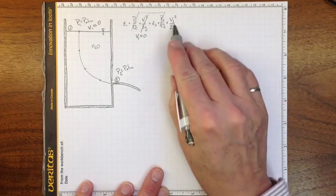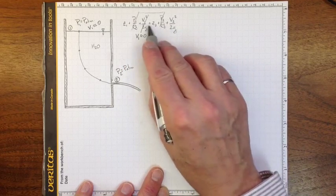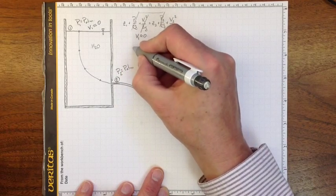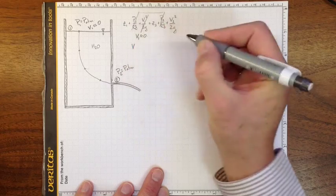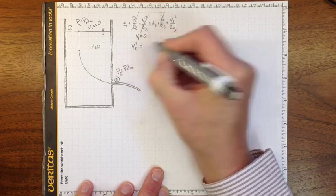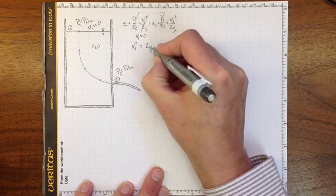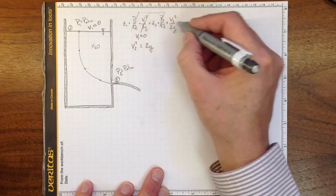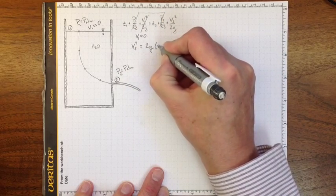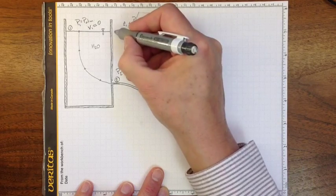And I'm left with the velocity down here, depending on the difference in the height, in a fairly straightforward way. So if I rearrange that, I'll get that v2 squared is equal to 2g times z1 minus z2, the difference in height.